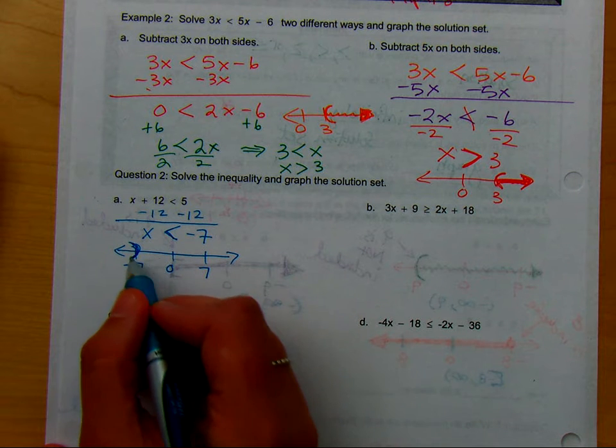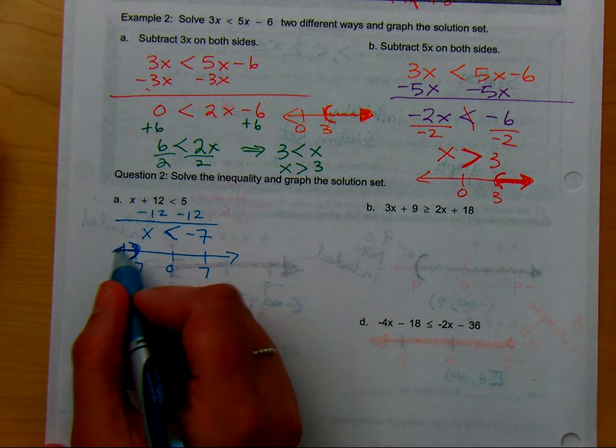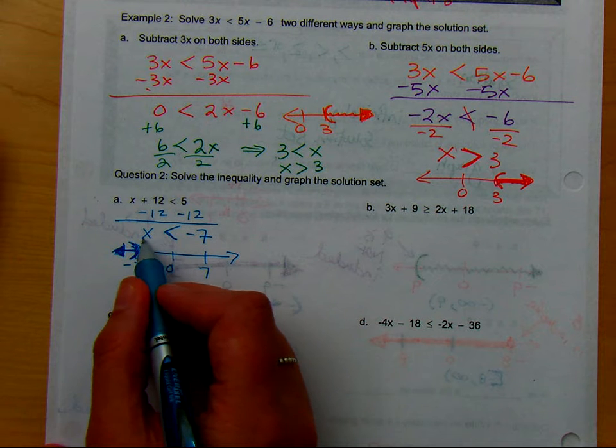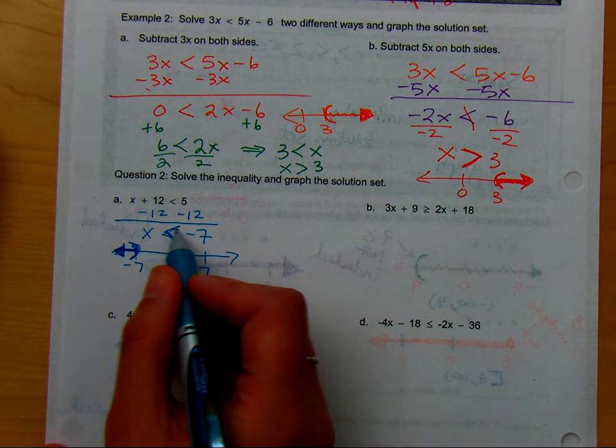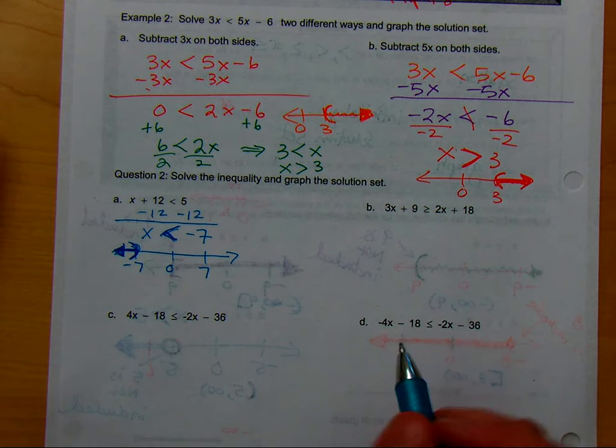I don't include the 7, I'm going below negative 7 in the opposite direction. Notice how, when my x is on the left, my arrow points the same way as my inequality. Pretty cool, right?